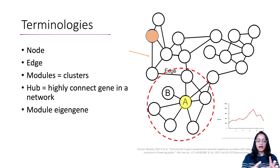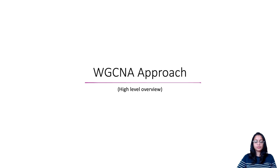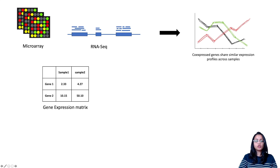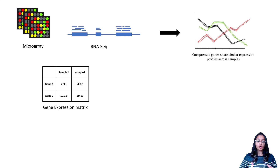There are additional terminologies and concepts I'm not covering in this video to keep it simplified and high level — including the mathematical steps, which I intend to cover in the next video. Looking at the various steps in WGCNA: this approach can be applied to microarray or RNA-seq data, both of which measure gene expression. Essentially, we have a gene expression matrix with rows as genes and columns as samples. Values could be intensity values from microarray or quantifications from RNA-seq data.